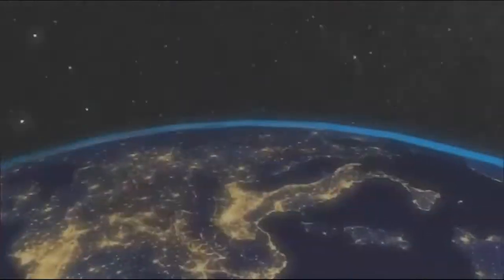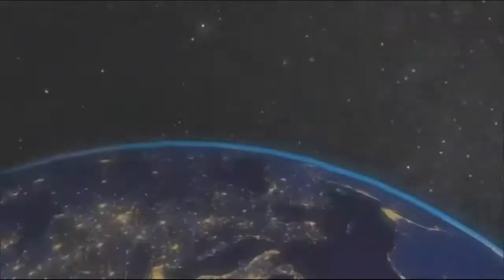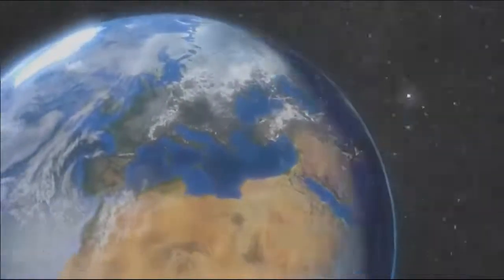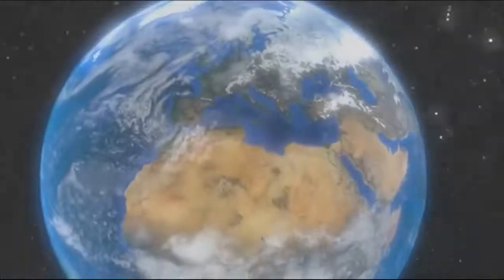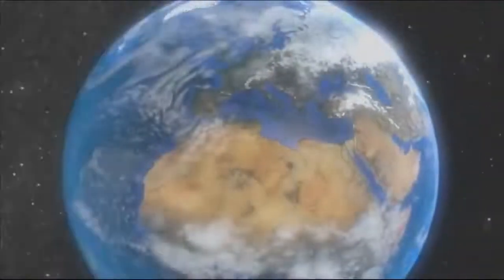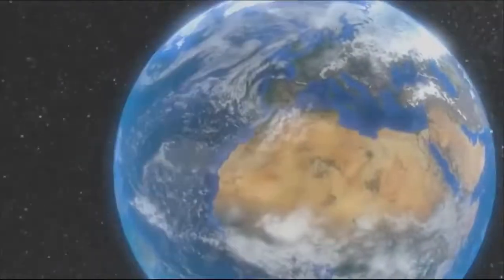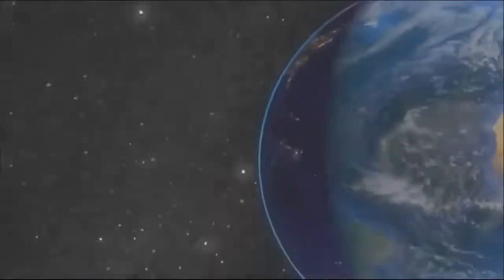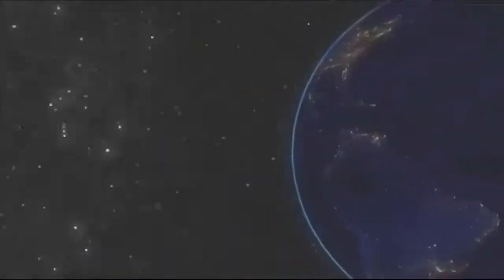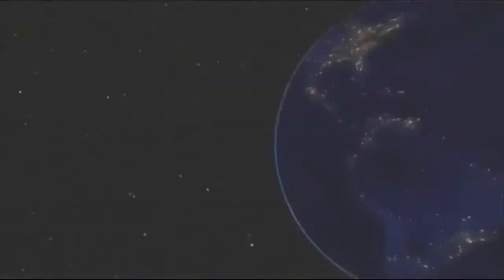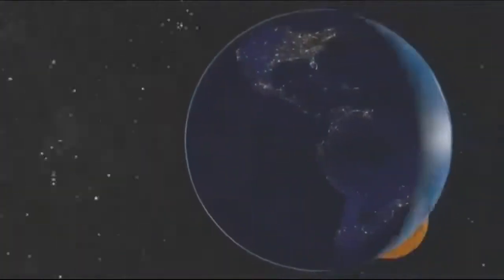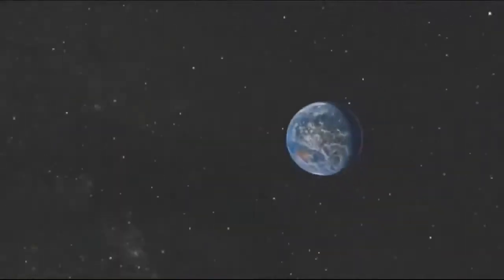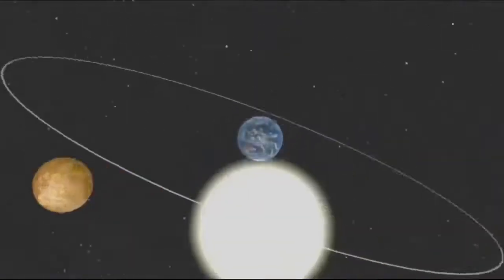We must remember that Einstein was originally forced to claim that the speed of light was constant in his special theory. Otherwise, he would have had no answer to Michelson's 1887 experiment that showed the Earth wasn't moving in space. Essentially, either Einstein made light constant, or he would have to make the Earth constant. But to make the Earth constant would mean that physics had been fundamentally wrong to its very core for the last 500 years since the Copernican revolution. So, to preserve the Copernican principle, Einstein felt philosophically compelled to choose light as the constant instead of the Earth.